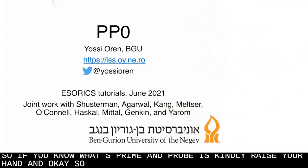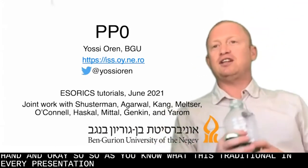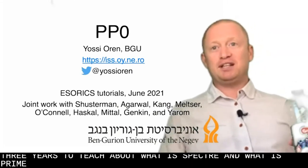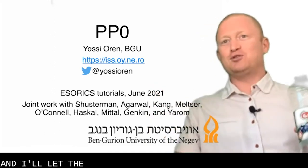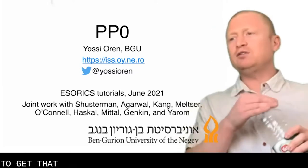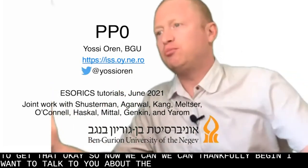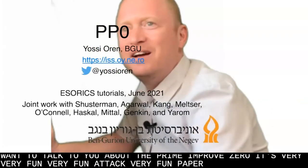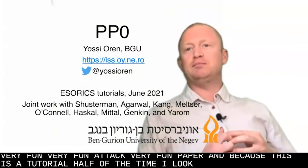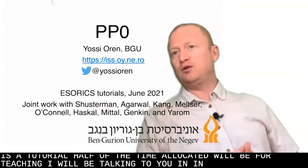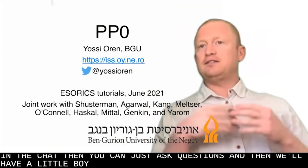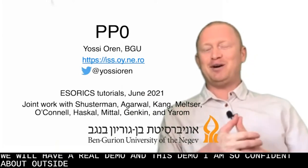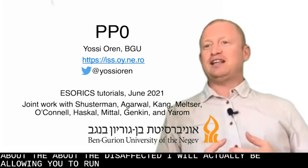It is traditional in every presentation about side-channel attacks in the past three years to teach about what is Spectre and what is prime and probe. So it is my responsibility as the first speaker of the tutorial to explain prime and probe, and I'll let somebody in the future talk about Spectre. Now we can begin. I want to talk to you about prime and probe zero — a very fun attack, a very fun paper. Because this is a tutorial, half the time will be for teaching and then we'll have a little break, and in the second half we will have a real demo.